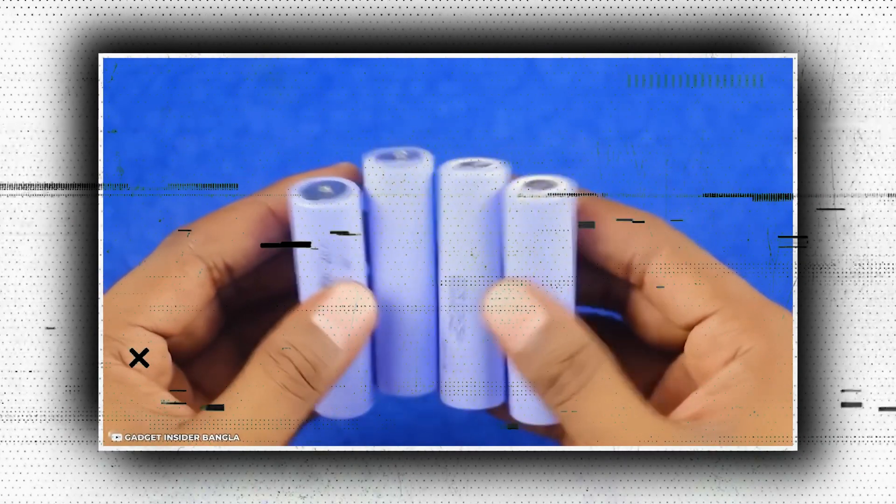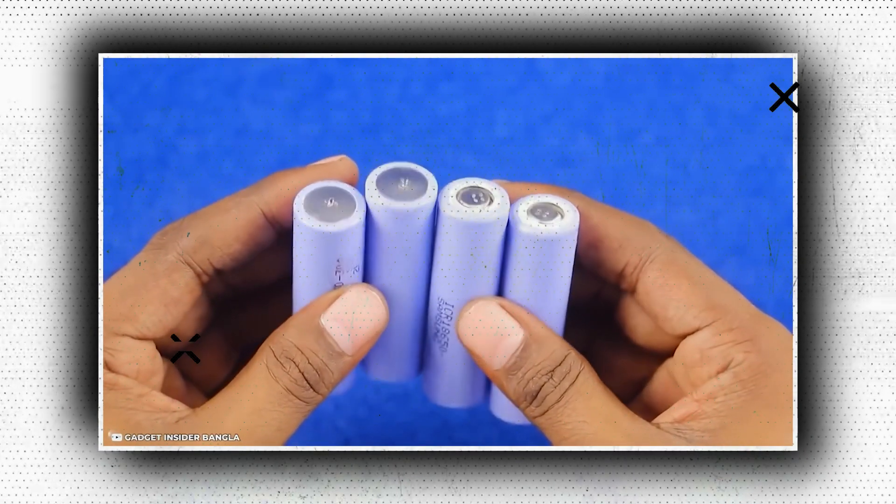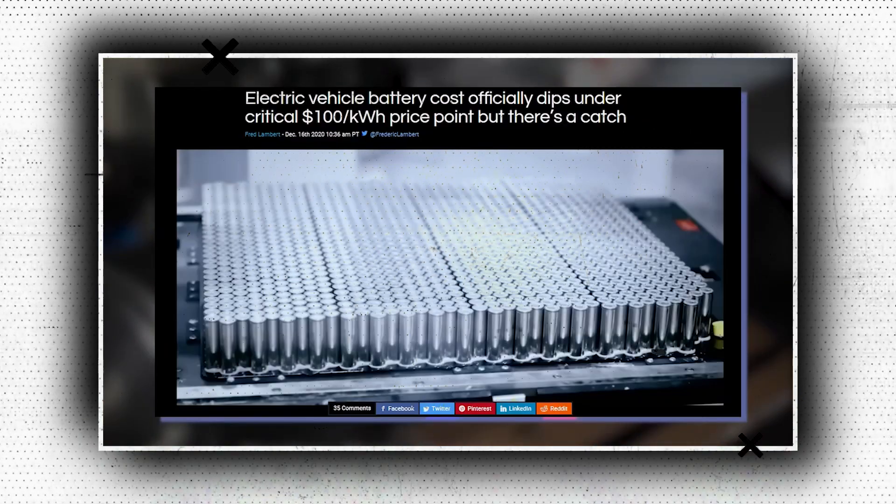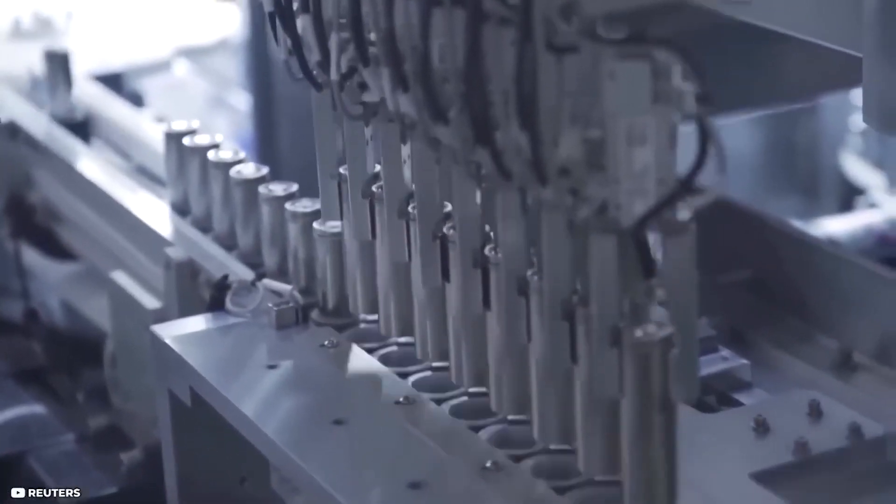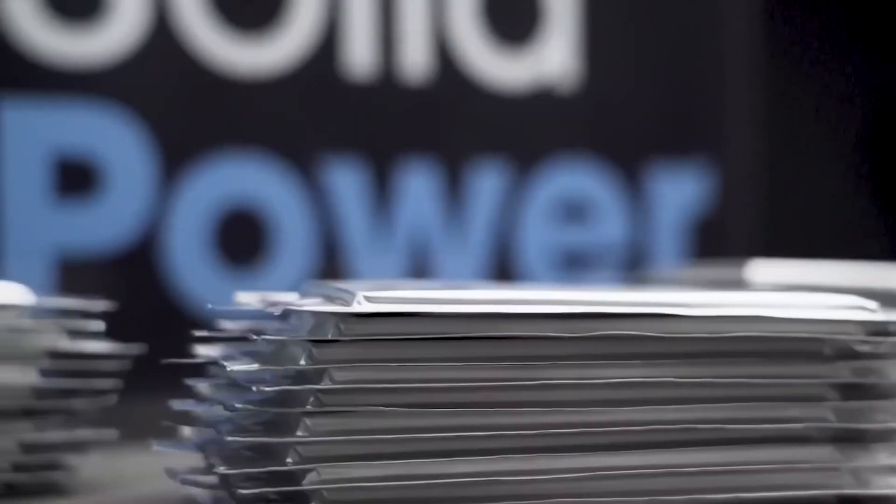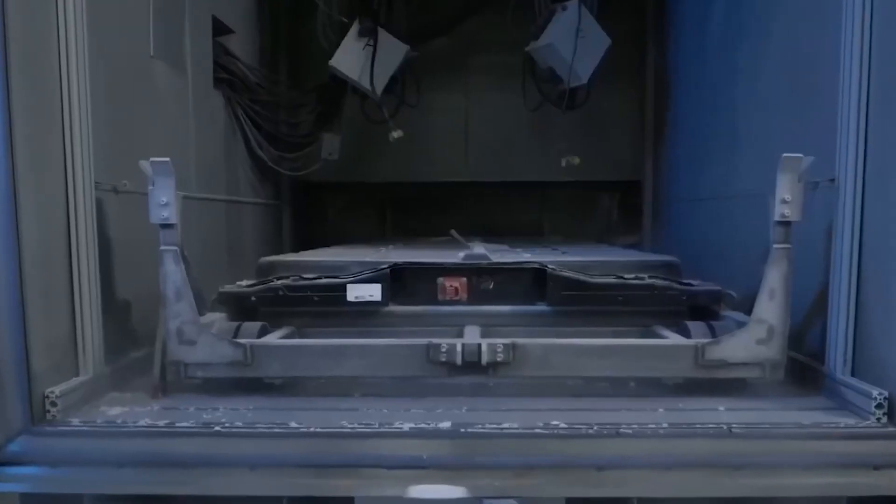By 2028, these batteries, which will have a high-nickel cathode that increases range while cutting costs by 10%, should be in use. Toyota claims that such improvements are already in the works. However, business leaders stress the need of innovating for the long term.